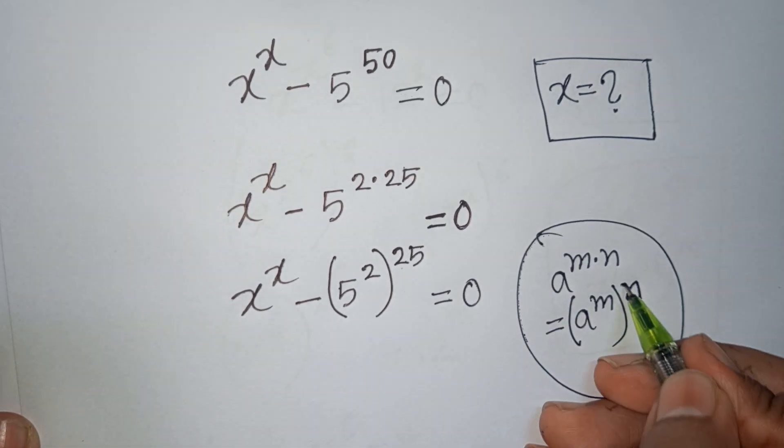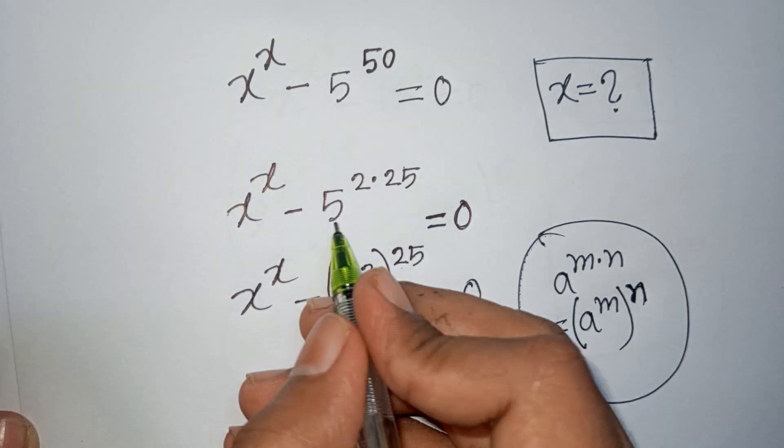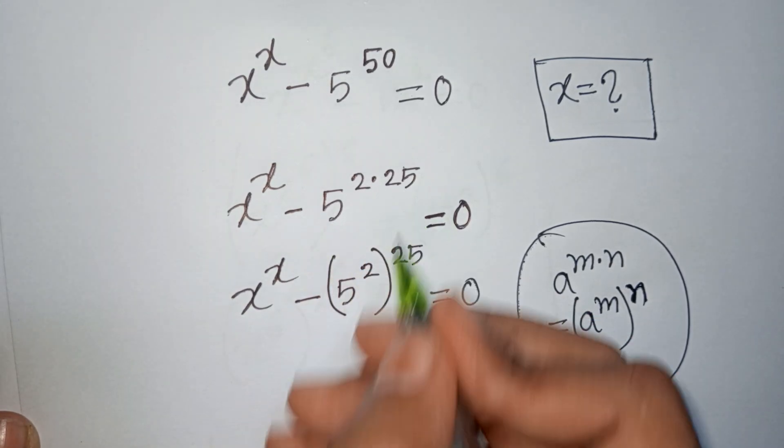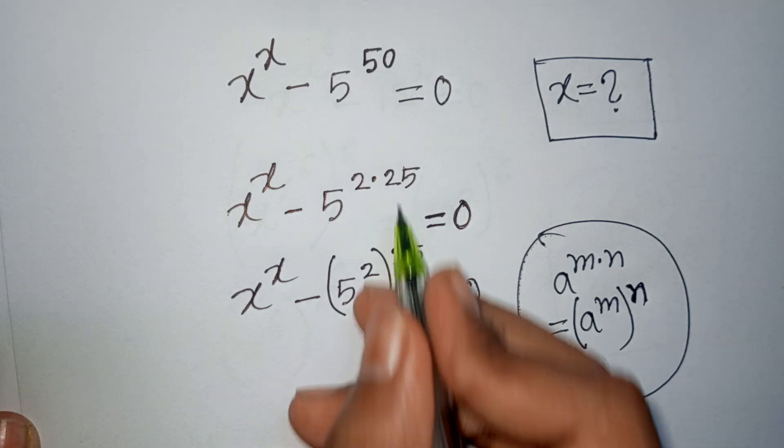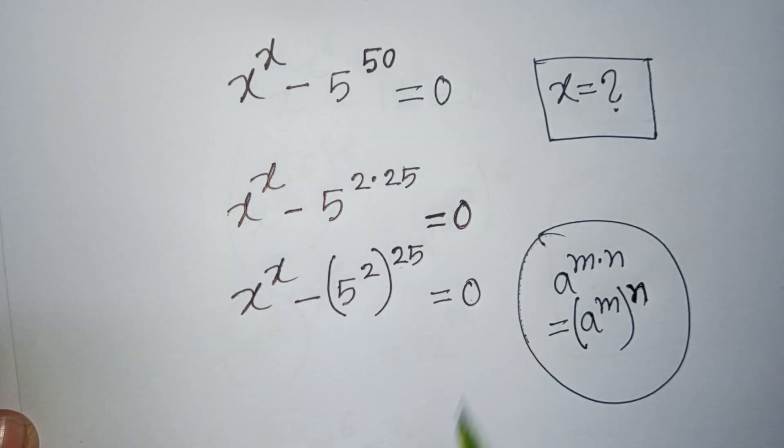So according to this rule, 5^(2×25) is the same as (5^2)^25, so we have x^x - (5^2)^25 = 0.